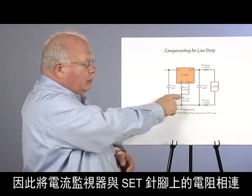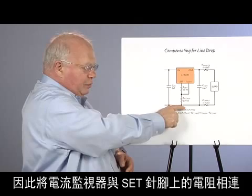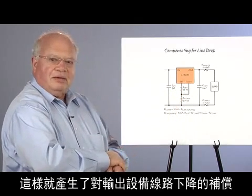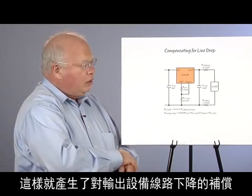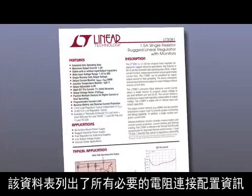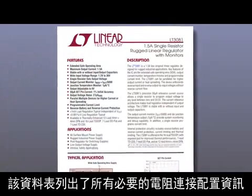So, we take our current monitor, feed it through a portion of the resistor on the set pin, and that gives us our compensation for line drops to the output device. The datasheet has all the formulas for the resistors as needed.